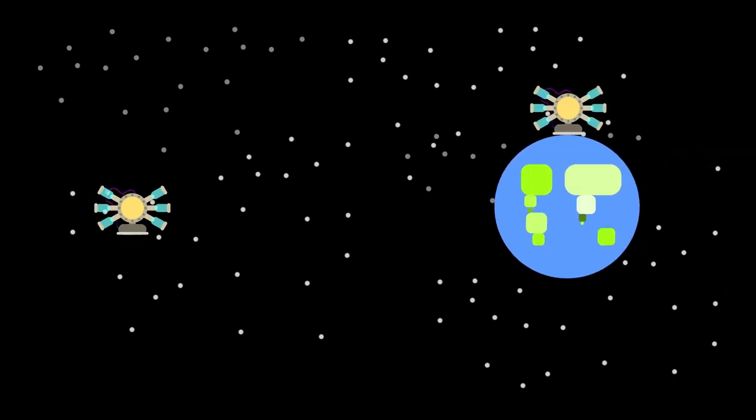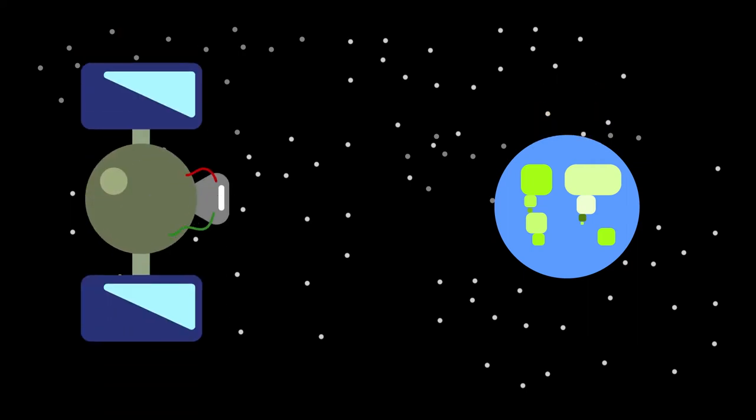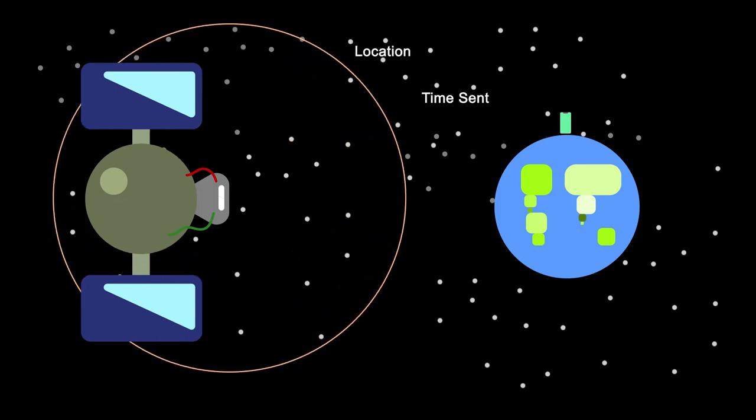These guys. Atomic clocks. GPS satellites are essentially atomic clocks in space that are synchronized with the atomic clocks on Earth. All these satellites do is constantly send out radio waves containing information about their location and a timestamp of when the signal is sent.